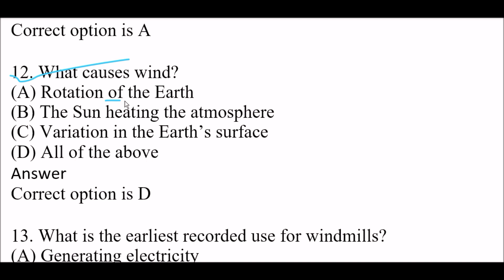Next question: what causes wind? Option A: rotation of the earth. Option B: the sun heating the atmosphere. Option C: variation in the earth's surface. Option D: all of the above. Right answer is Option D — all of the above. The causes of wind are: rotation of the earth, the sun heating the atmosphere, and variation in the earth's surface.